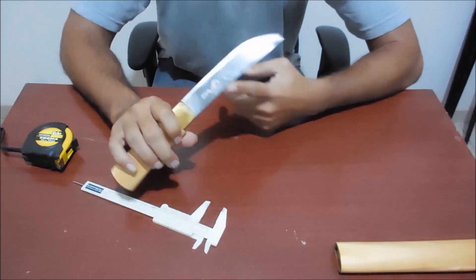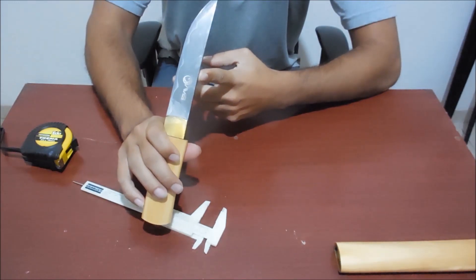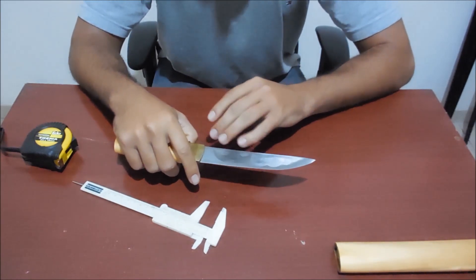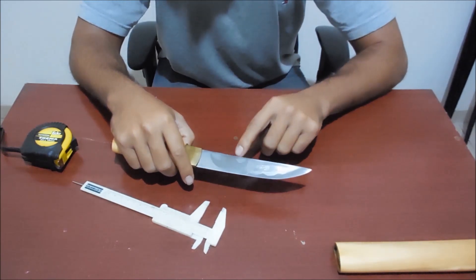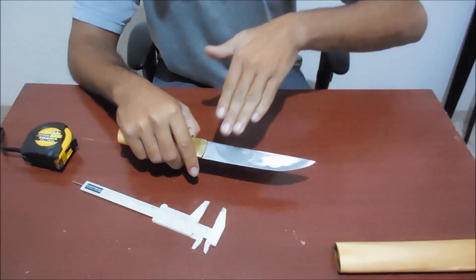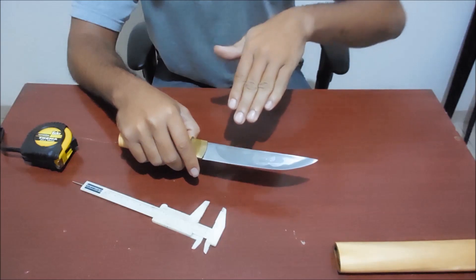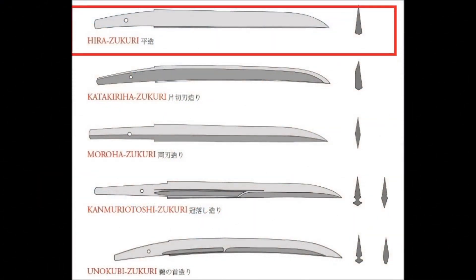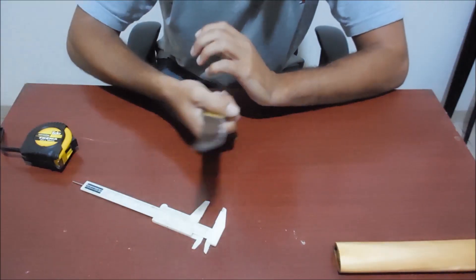I can see that this blade has a Hirazukuri shape. So from the back of the blade to the edge, it's a flat surface. So it goes almost straight. It can cut very well.